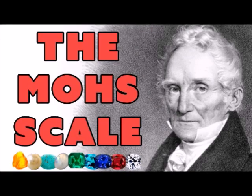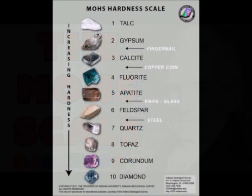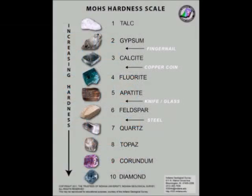The Mohs scale was created by Frederick Mohs, a German mineralogist, in 1812. He selected ten minerals of distinctly different hardness that range from a very soft mineral, talc, to a very hard mineral, diamond. Every mineral collector should know about the Mohs scale of hardness and the mineralogist who developed it.